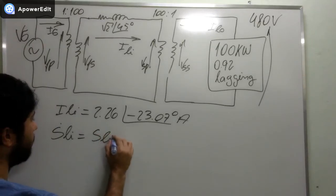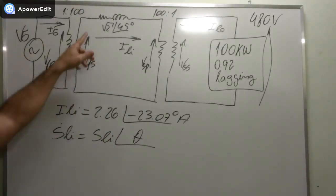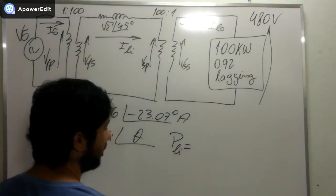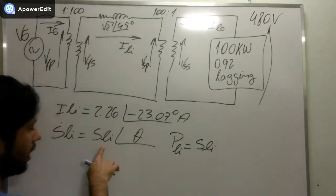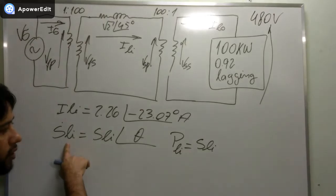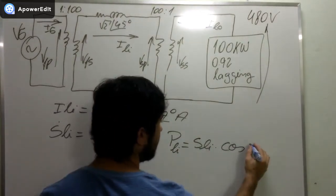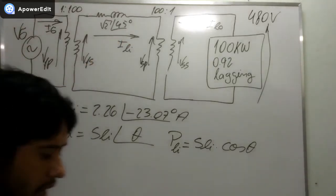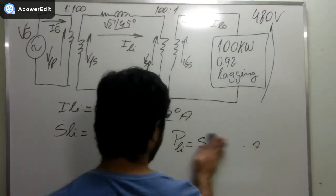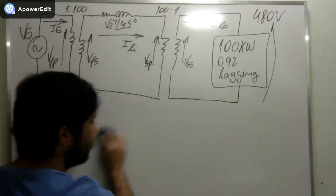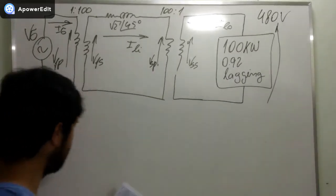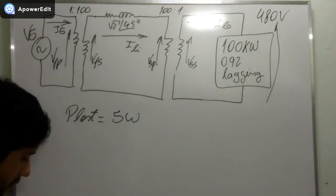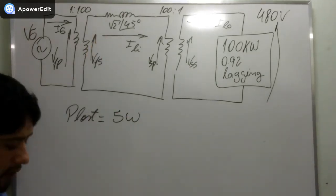We now calculate the complex power consumed by the transmission line with this much smaller current, then find the real power by multiplying the apparent power magnitude by cos(45°). The result: the power lost in the transmission line with transformers is approximately 5 watts.